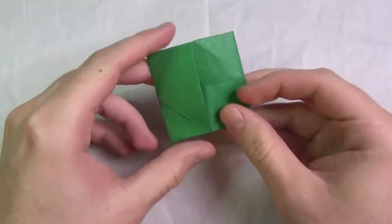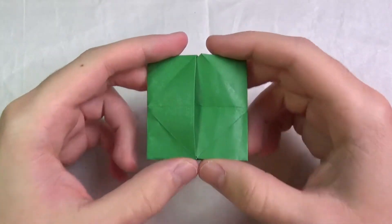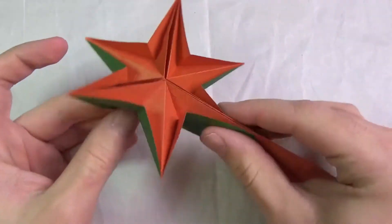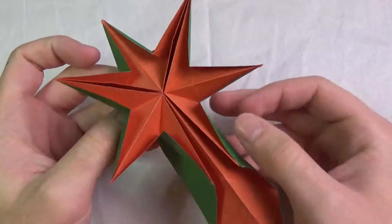So it's a Dogshi Flicker and it's not just any Dogshi Flicker. It turns into a six-pointed star. See, it opens up into a star.